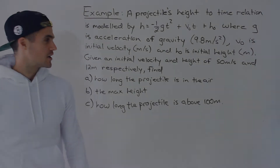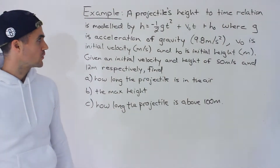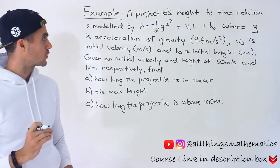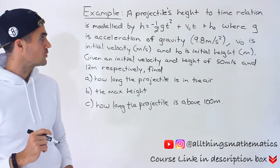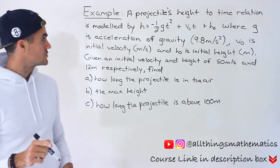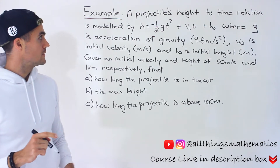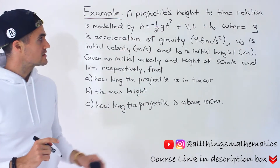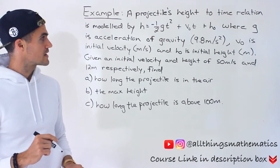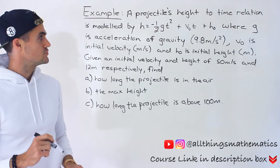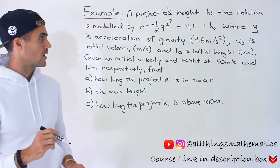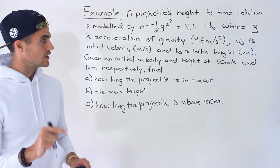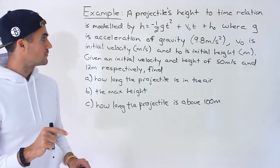Welcome back everyone. Patrick here. Moving on to another question dealing with quadratics, another word problem. We're told the projectile's height to time relation is modeled by this function: h equals negative one over two g t squared plus v naught times t plus h naught.